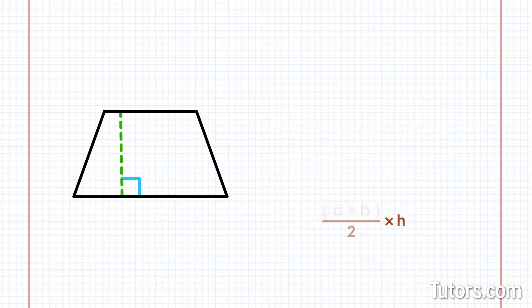Let's try an example together. Trapezoid L-M-N-O has parallel bases L-M and N-O. Line segment L-M is seven centimeters long and line segment N-O is thirteen centimeters long. We will label longer side N-O as A and shorter side L-M as B. The height H is five centimeters.